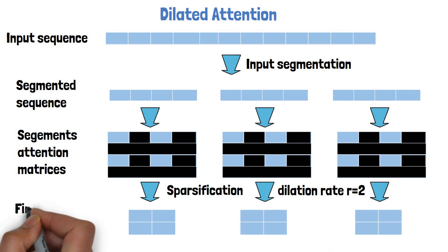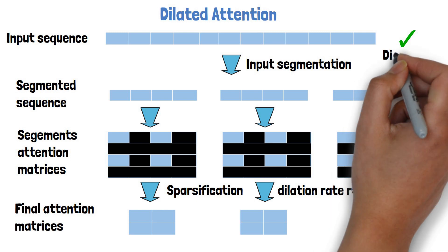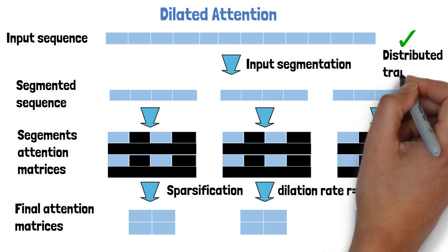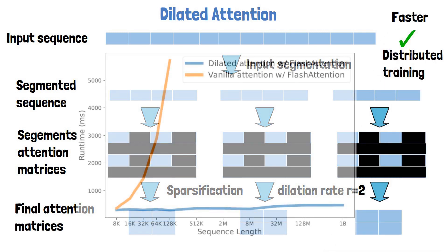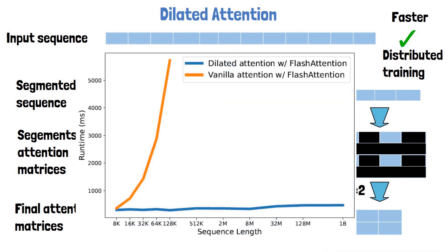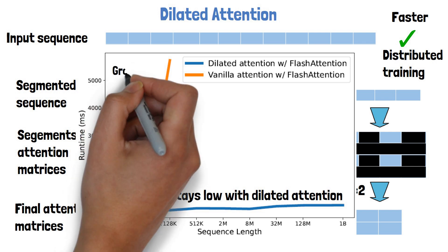A very important note is that the attention on each segment can be done in parallel, which allows distributed training on multiple GPUs. Additionally, this approach is significantly faster than the original self-attention on long sequences, as the researchers show in this chart, where we can see that the runtime of dilated attention stays very fast even when sequence length is increased significantly, while the original attention grows exponentially.